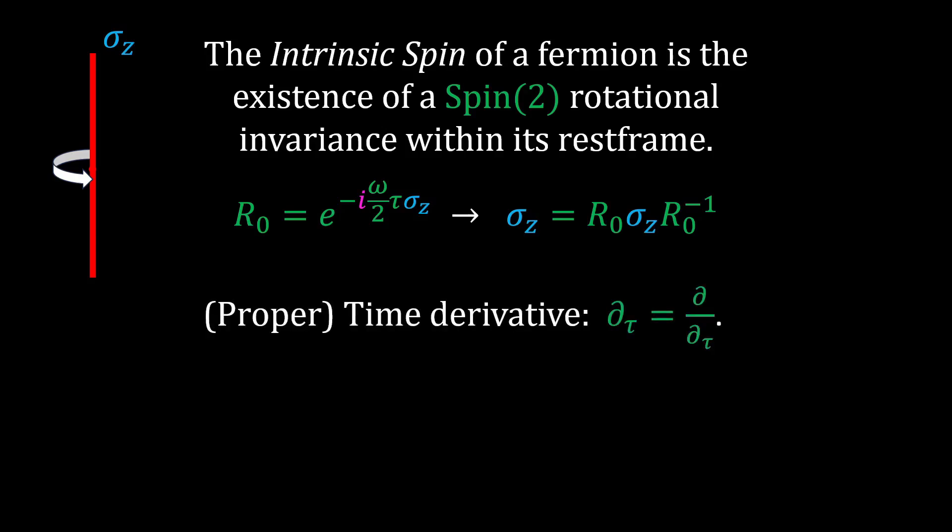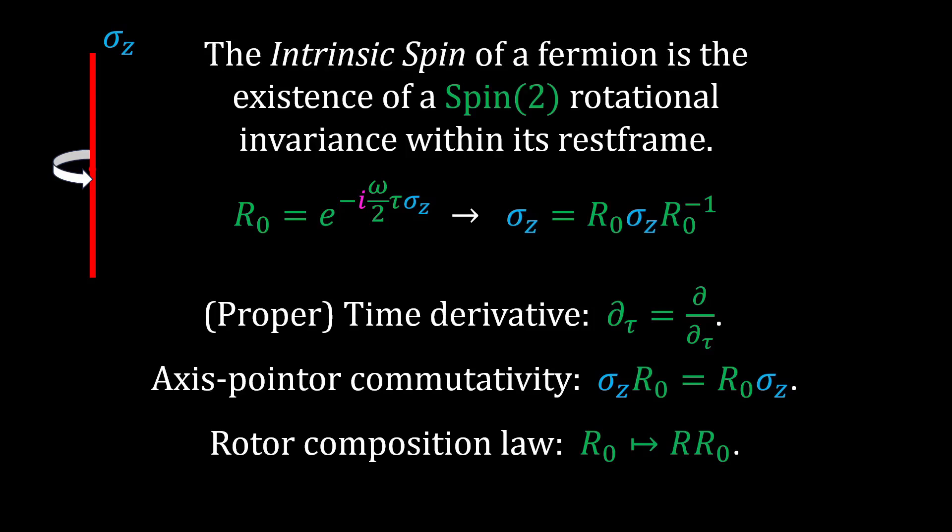The first is the derivative with respect to time, because we'll be using it. The second is that the spin 2 invariance implies that the spin axis commutes with the spin pointer. And the third is to recall that when composing rotation, rotors transform via one-sided transformations. Now, let's officially begin the derivation.